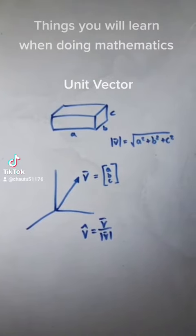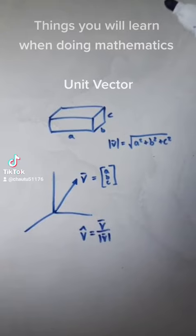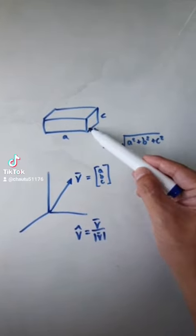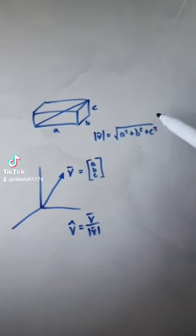Things you will learn when doing mathematics: unit vectors. A unit vector is a vector of length one. So let's look at this cuboid of length a, b, and c. This diagonal length here is given by this—I'm expecting